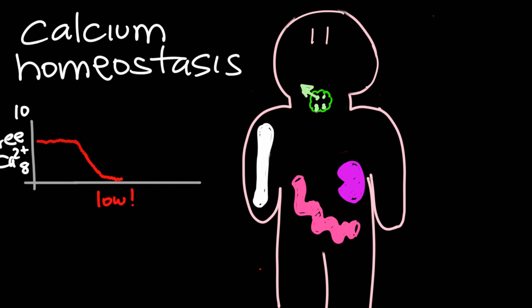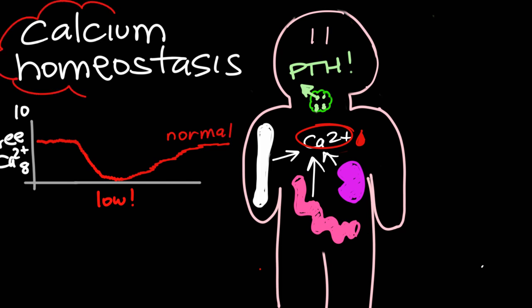So remember, whenever calcium levels get low, the parathyroid glands are going to broadcast PTH signal which will help our bones know to release calcium, our kidneys to reabsorb calcium, and our intestines to absorb calcium from our diet. This helps bring our blood calcium levels back up to normal maintaining homeostasis.